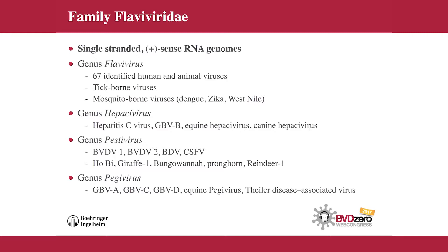The next genus is the Hepacivirus genus, and the prototype virus in this group is the hepatitis C virus. This virus also has a worldwide distribution and creates tremendous problems in the human population. The hepatitis C virus can be separated into six different genotype groups, and currently there are six species in the genus Hepacivirus. They also include two newly recognized species in veterinary medicine: the equine hepacivirus and the canine hepacivirus.